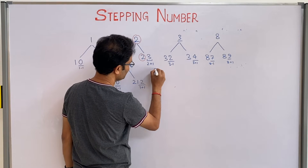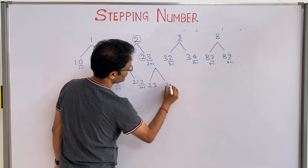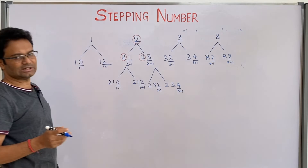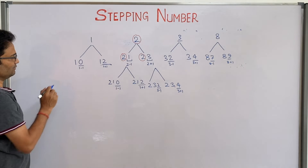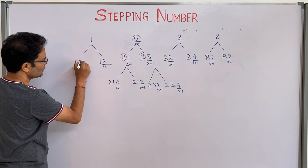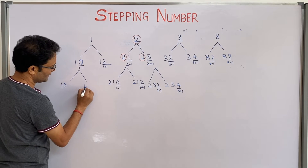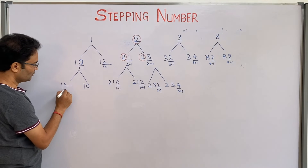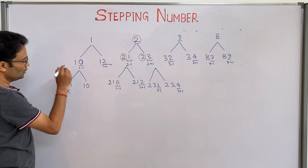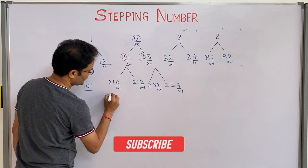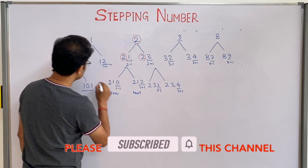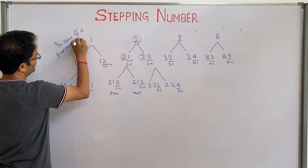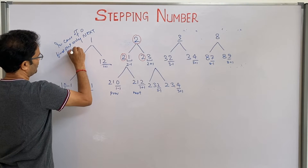Now we have two corner cases. First, if the last digit is 0 — for example 10 — then 0 minus 1 gives minus 1, which cannot be a stepping number. So in the case of 0, we only find the next number (digit + 1), not the previous number.